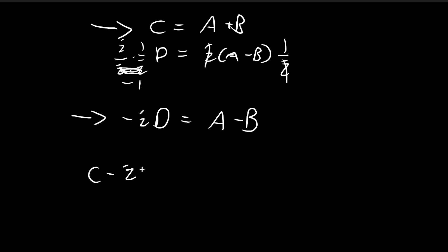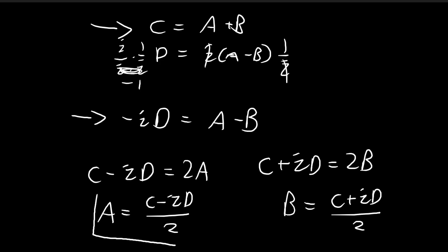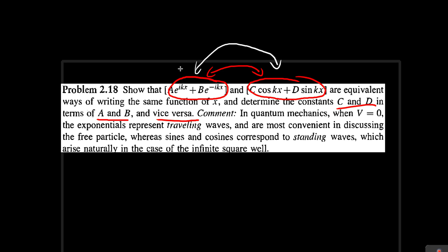If I add them up, I get this is equal to 2a. So a is equal to c minus id divided by 2. And then if I subtract the two equations together, I get this is equal to 2b. So b is equal to c plus id divided by 2. And so there you have it. Now you can define a and b in terms of c and d in such a way. And then under this condition, our two expressions over here will be equivalent.